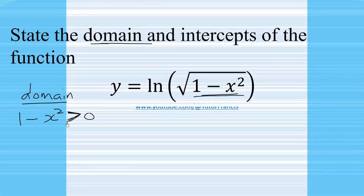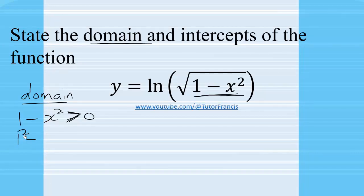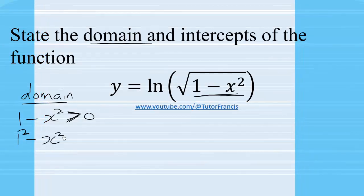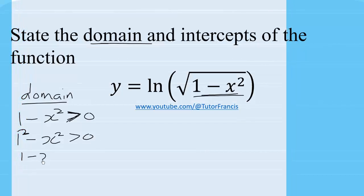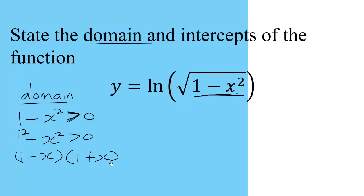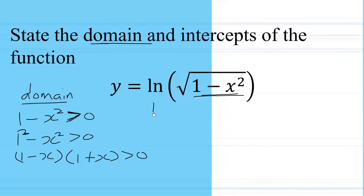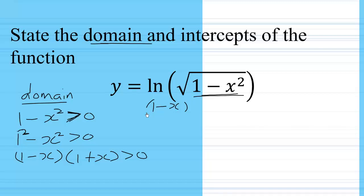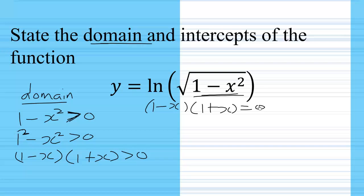We can factor this quadratic inequality. We have 1 squared minus x squared, which is a difference of two squares, giving us 1 minus x times 1 plus x. So we need to solve the quadratic inequality, and the corresponding quadratic equation is: (1 minus x)(1 plus x) equals zero.